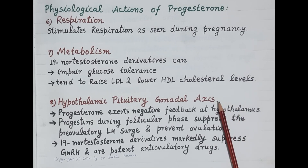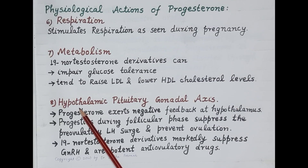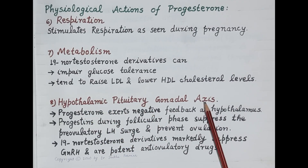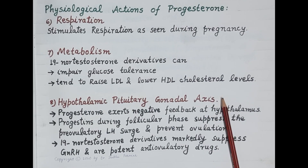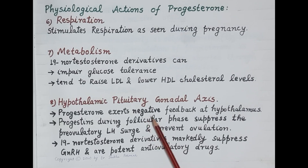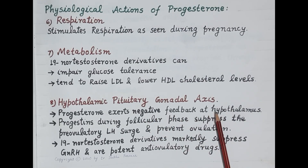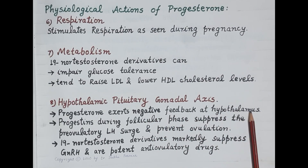Regarding the effect of progesterone on the hypothalamic-pituitary-gonadal axis: progesterone secretion is regulated by this axis. The corpus luteum produces progesterone, and if the egg is not fertilized, progesterone itself exerts a negative feedback effect on the hypothalamus, causing a fall in blood levels of progesterone.